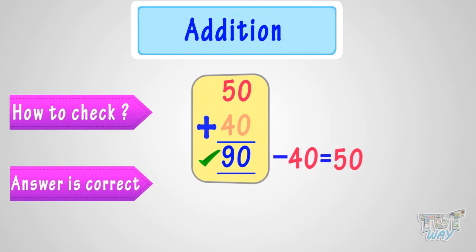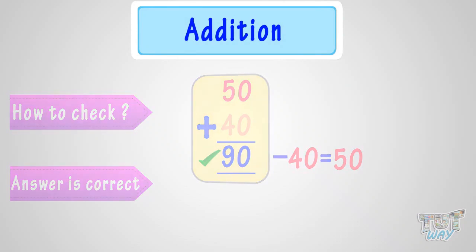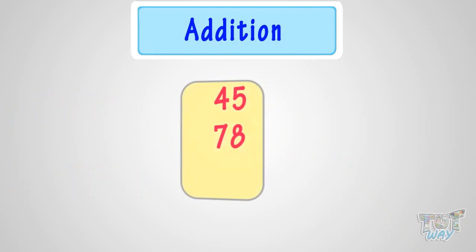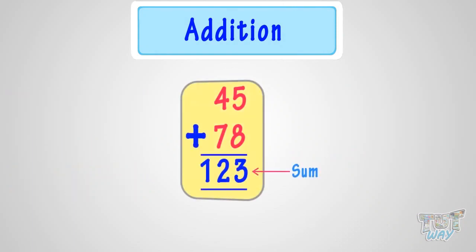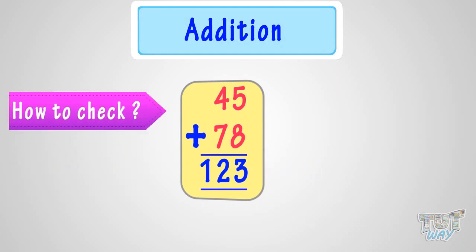Let's take another example. We saw 45 plus 78 is 123. Now, how can we check this answer? We have to subtract any one of the addends from the sum, and if we get the other addend, our answer is correct.